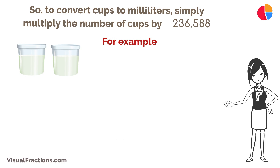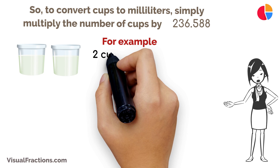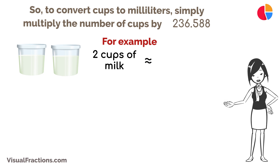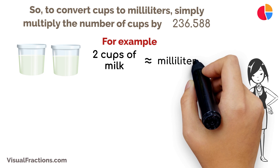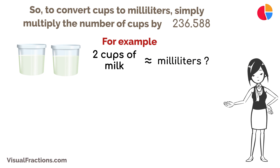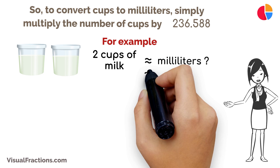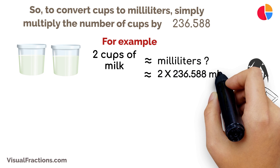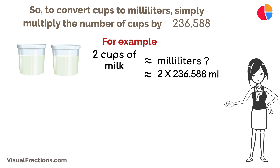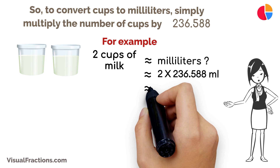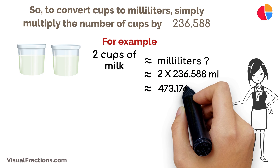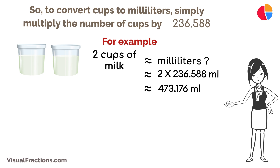For example, if you have a recipe that calls for two cups of milk and you want to know how many milliliters that is, just multiply two cups by 236.588. This gives you about 473.176 milliliters.